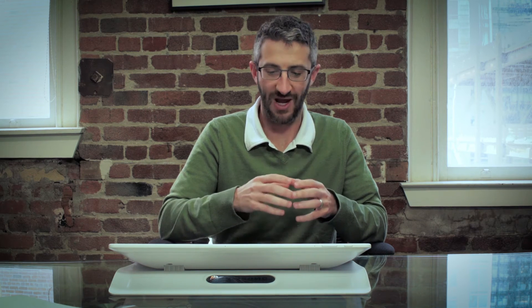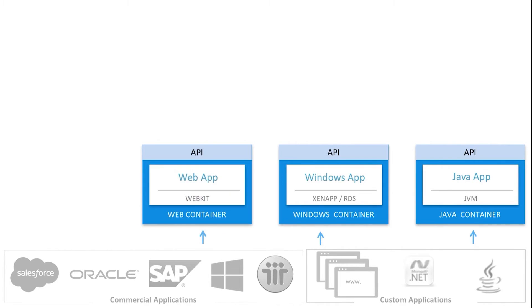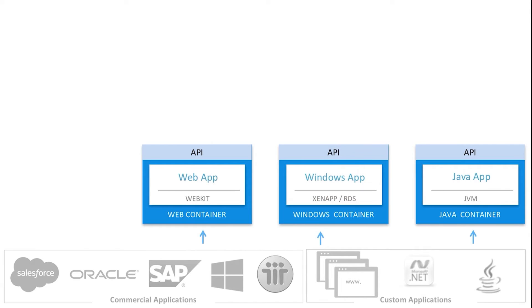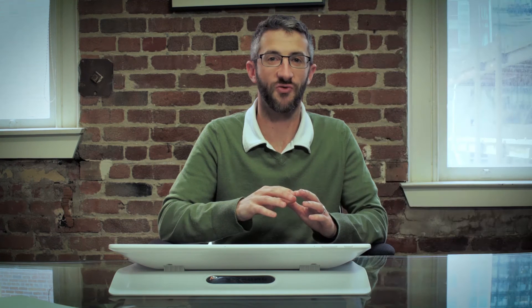We have different containers for different types of technologies. For example, we have a web container that's based on a headless web browser, a Windows container that's based on the Win32 APIs, and a Java container that's based on Java Swing. We also have a set of other containers for other technologies, such as Lotus Notes and SAP GUI.